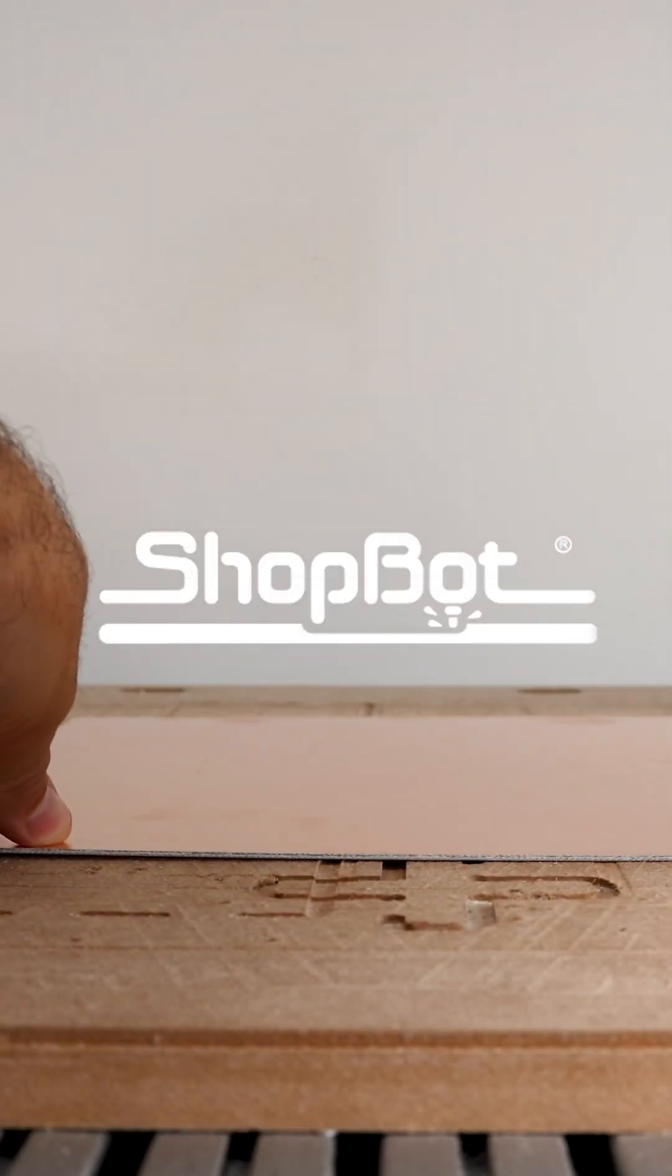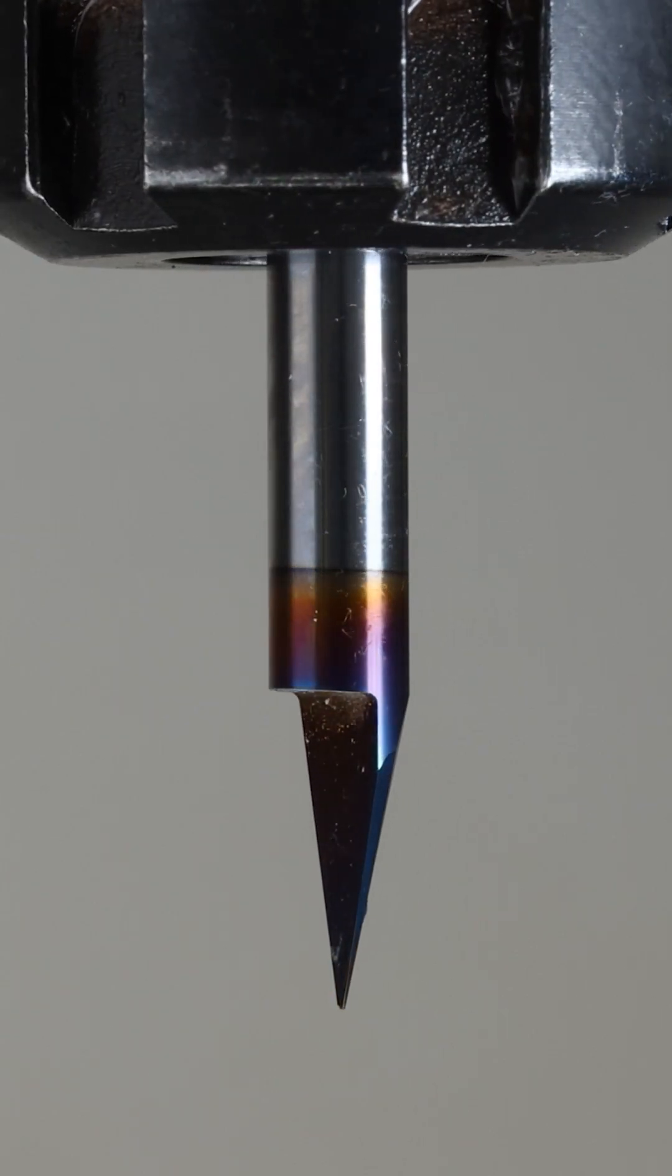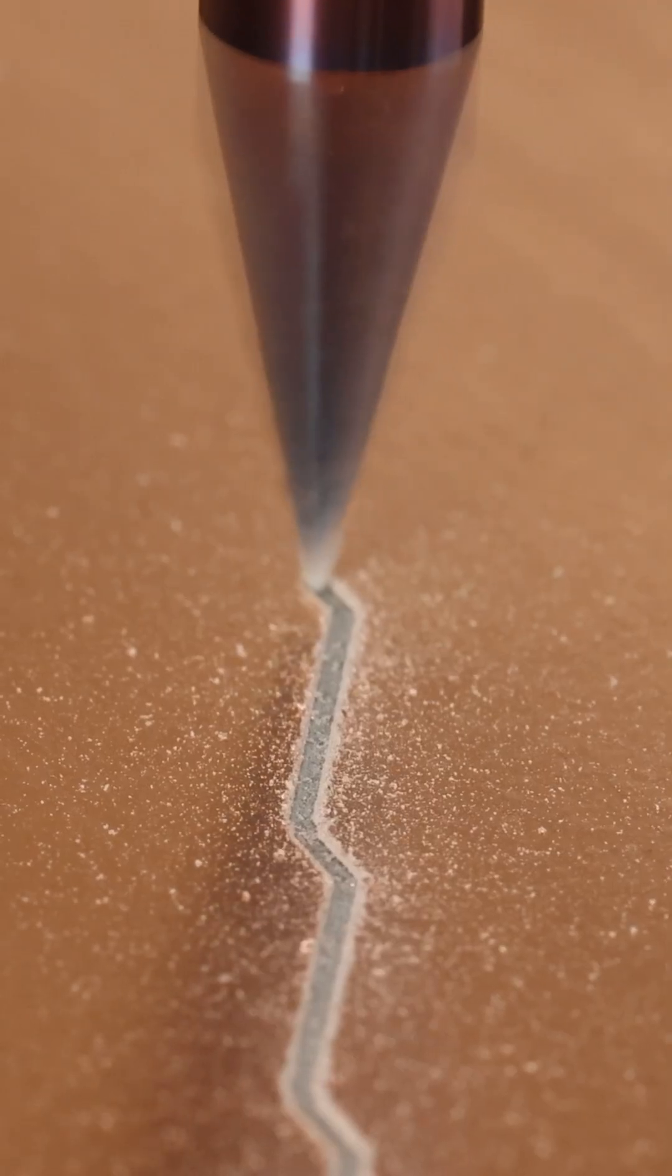Next, we'll tape our blank down to our spoil board and insert a 30-degree V-bit into the collet. The V-bit's sharp point allows us to make tiny traces onto our circuit board blank.